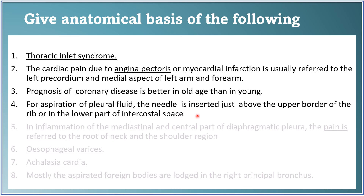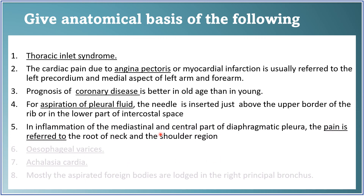The prognosis of coronary disease is better in old age than in youth because collateral circulation is possible — anastomoses have enlarged with age. For aspiration of pleural fluid, the needle is inserted just above the upper border of the rib, or in the lower part of the intercostal space, to avoid injury to structures in the costal groove. In inflammation of the mediastinal and central diaphragmatic pleura, pain is referred to the root of the neck and shoulder region because of the phrenic nerve (C3, C4, C5) and supraclavicular nerve (C3, C4).